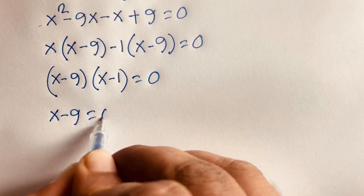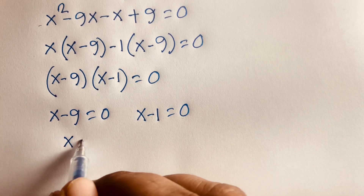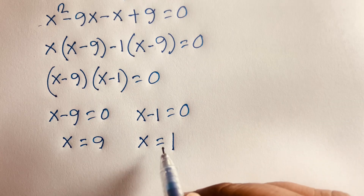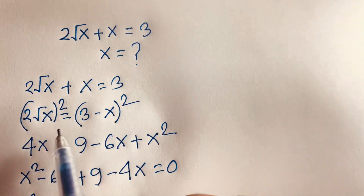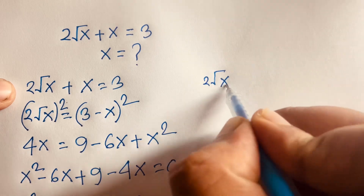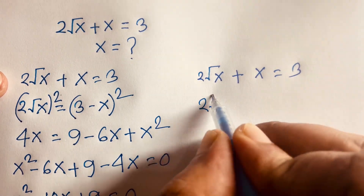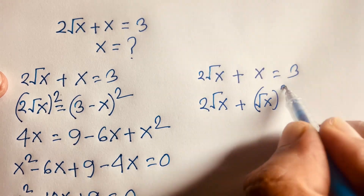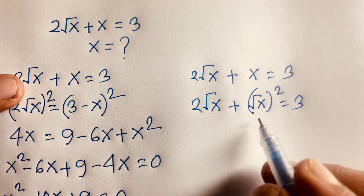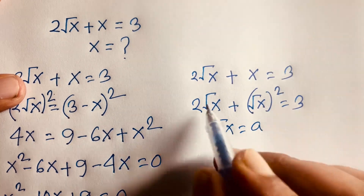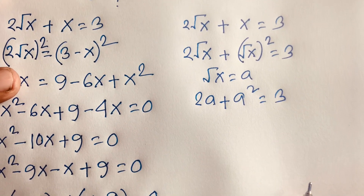This gives two cases: x = 9 or x = 1. Now let's solve using Method 2. Our equation is 2√x + x = 3. Since x = (√x)², the equation becomes 2√x + (√x)² = 3. Let a = √x, so we get 2a + a² = 3.